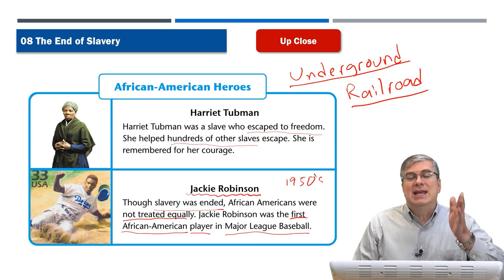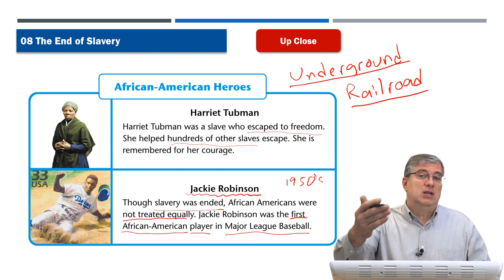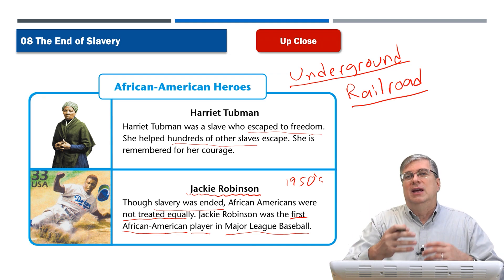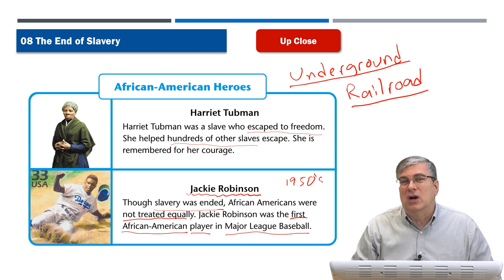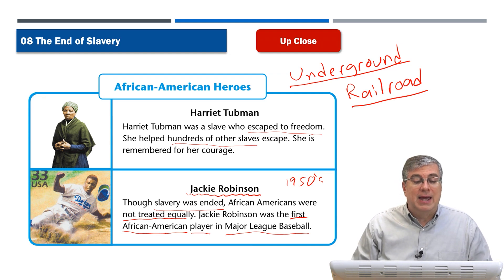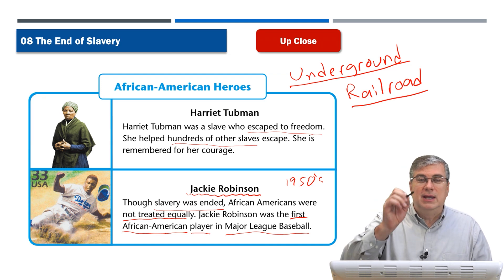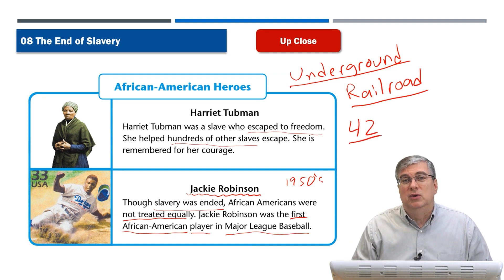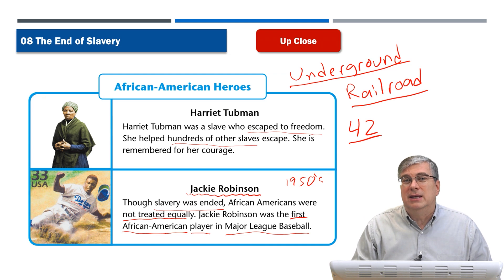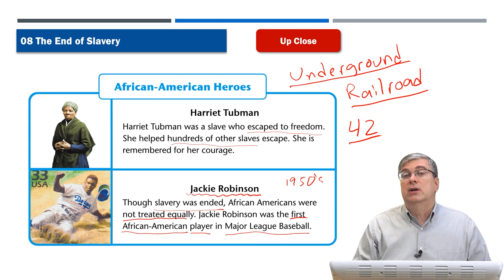Jackie Robinson became very famous because he was the first African American player accepted by the Dodgers — a very famous American baseball team. They're in Los Angeles now, but they used to be in New York. Sometimes teams change cities when someone buys the team and moves it. In the 1950s the Dodgers were in New York, and they recruited Jackie Robinson to play for the team. There's a really good movie called 42 that tells his story and shows the discrimination and the controversy.